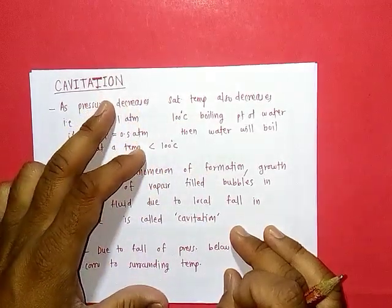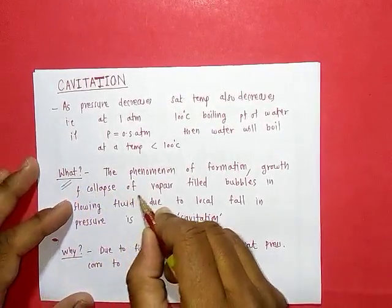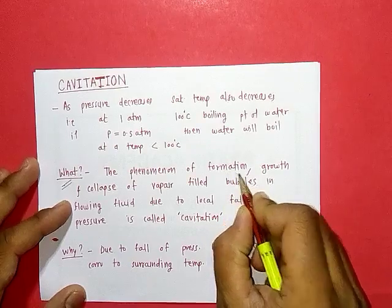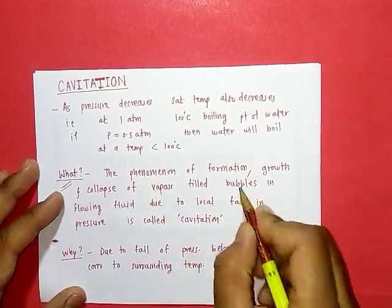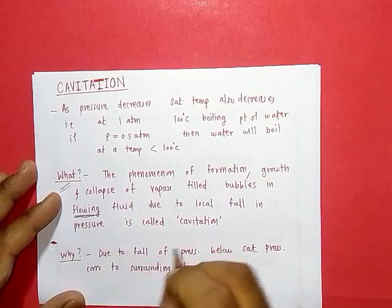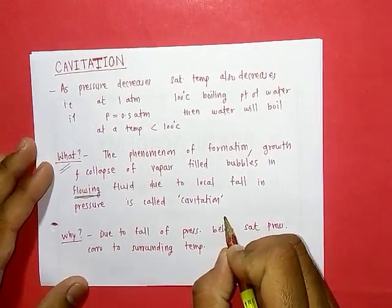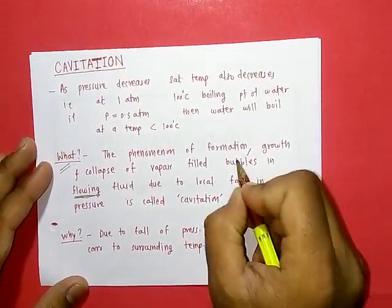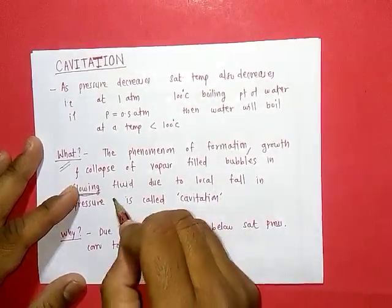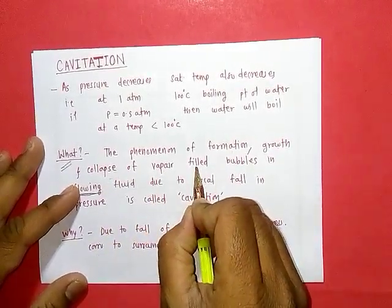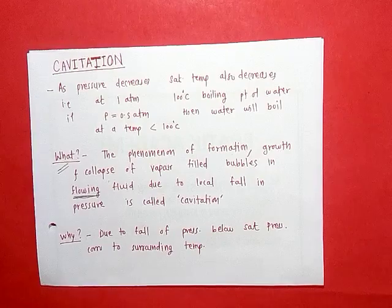Cavitation is the phenomenon of formation, growth, and collapse of vapor-filled bubbles in a flowing fluid due to a local fall in pressure. It consists of three steps: formation of bubbles, growth of vapor bubbles, and collapse of vapor bubbles in flowing fluid.